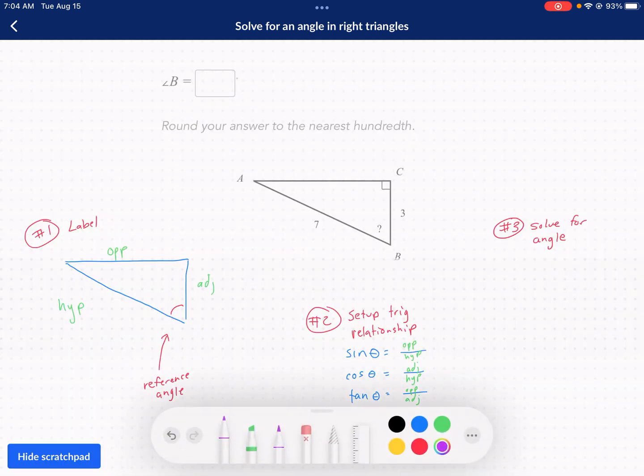Number one, you want to label the sides. Given that you have a reference angle, in this case we want to know what B is, that's going to be our reference angle. We need to label the sides. The hypotenuse is always the longest side, always opposite the 90 degree angle. We have our 90 degree angle right here and I'm going to label our hypotenuse HYP, it's a little bit shorter.